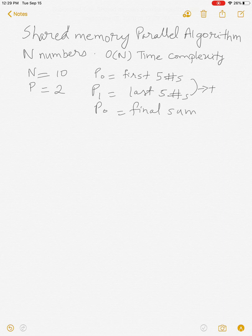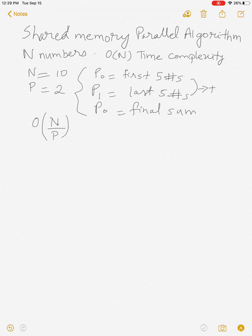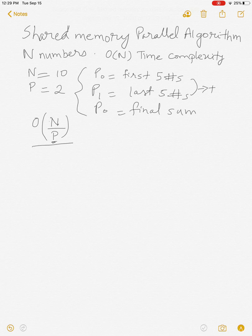If we analyze the time complexity, using two processors gives us O(n/P), because the numbers can be divided approximately equally among P processors. Then some additional steps produce the final sum. But this is only part of the complete time complexity.